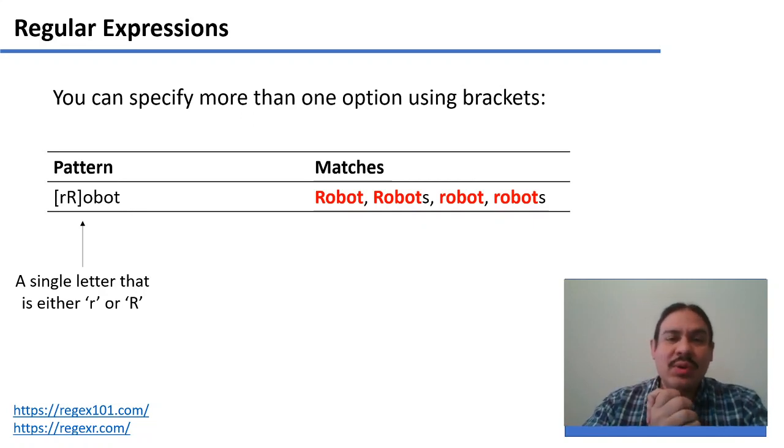We probably want to find words that are either in lowercase or uppercase because they're the same word. We can specify more than one option using square brackets. For example, square bracket lowercase R, uppercase R, square bracket tells you that it should find one of those two characters with just one between the lowercase or the uppercase.